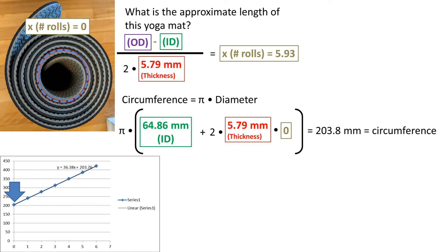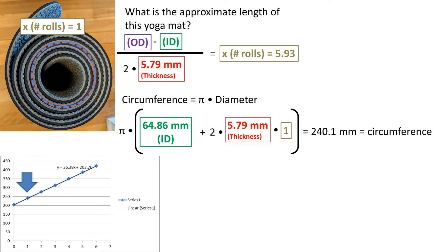So at zero rolls or for the initial first roll, the circumference would be 203.8 millimeters. I have graphed it in the bottom left of the screen for your reference. The next roll, which is roll one, would be 240.1 millimeters for the circumference. Because for this roll, we add two additional thicknesses to the diameter. Two times the thickness times one.